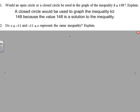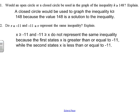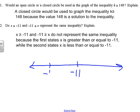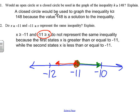Number two: do X is greater than or equal to negative 11 and negative 11 is greater than or equal to X represent the same inequality? Those do not. The first one shows that X is larger, so if we draw a number line, the first inequality would be graphed with a closed circle going to the right. The second one says that negative 11 is greater than or equal to X, so this one would be graphed with the ray going to the left. So those are not the same inequality.